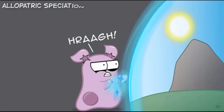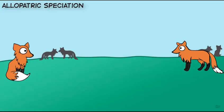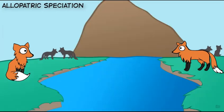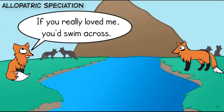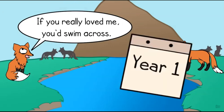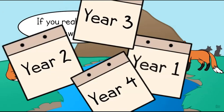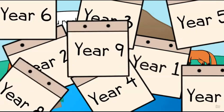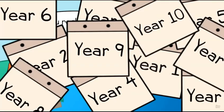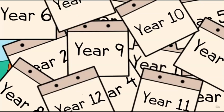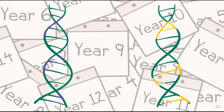In allopatric speciation, there's a geographic barrier that separates the populations. While natural selection is acting on these populations, there is also a geographical barrier — like a river or a mountain — that keeps them from interbreeding and sharing the same gene pool. Eventually, over a period of time, there can be change in the separated populations through mechanisms like natural selection or genetic drift. Over time, these populations can have significant genetic differences that may not allow them to interbreed, even if they were brought together.